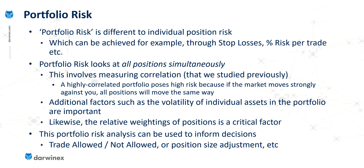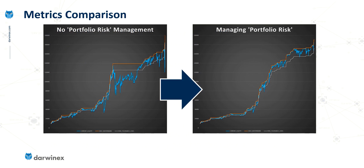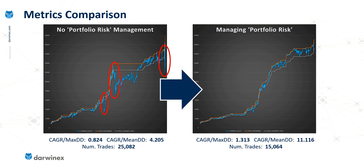We're now in a position where we can use that analysis to inform the decisions we make — in other words, is a trade allowed or not, or do we need to adjust a position size to allow it? By managing risk in this way, the ultimate objective is to reduce the number of significant drawdowns from events when the market goes against a correlated portfolio, in order to produce a much smoother equity curve like the example shown here. Associated with that will be an improvement in the various metrics used to measure performance.